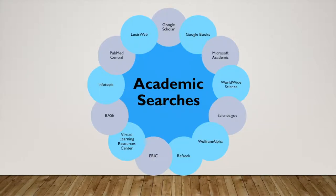I'm going to briefly go through some of the different search engines available on the web. We know Google Books, Google Scholar, and Google are wonderful resources, but there are a lot of other really good options as well. We're going to explore Microsoft Academic, WorldWideScience, Science.gov, Wolfram Alpha, RefSeek, ERIC, the Virtual Learning Resources Center, Infotopia, PubMed Central, LexisWeb, and all kinds of different sources — giving you a quick overview of what each source is and how you can use it in research in class. Let's dive right in, starting with the Google suite.